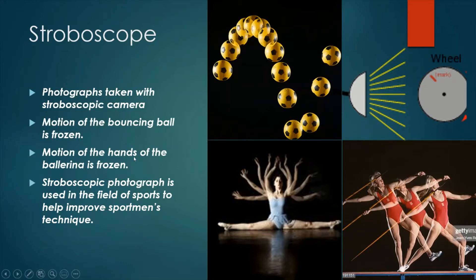The motion of the hands of the ballerina is frozen. We see different position of the hands. Stroboscopic photograph is used in the field of sports to help improve sportsman's technique.